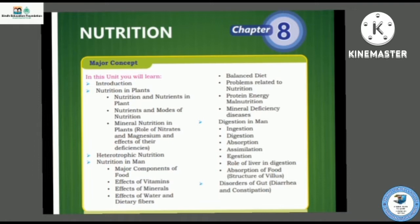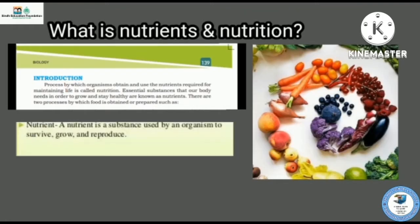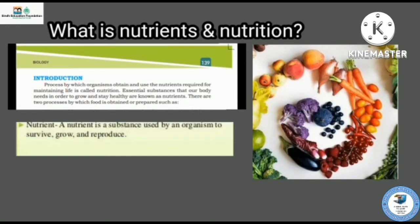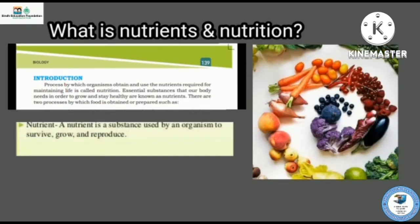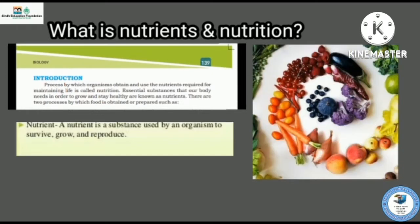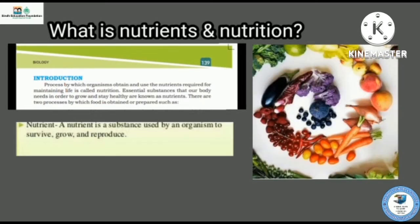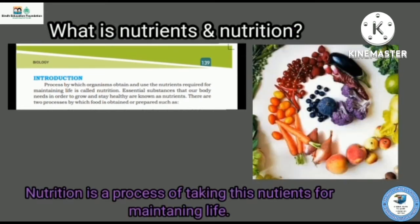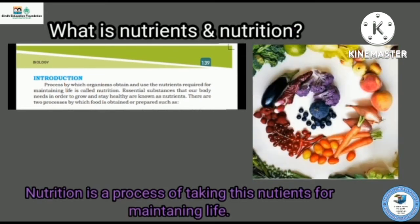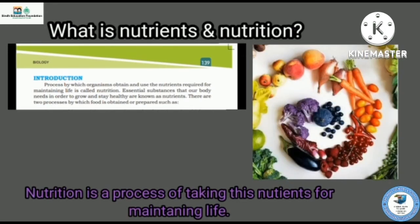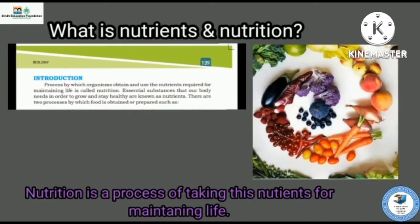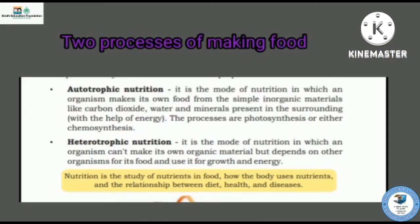Starting with the first topic: what are nutrients? Nutrients are the essential substances used by organisms to survive and grow, obtained from vegetables and fruits. Nutrition is a process of taking these nutrients for the maintaining of life.